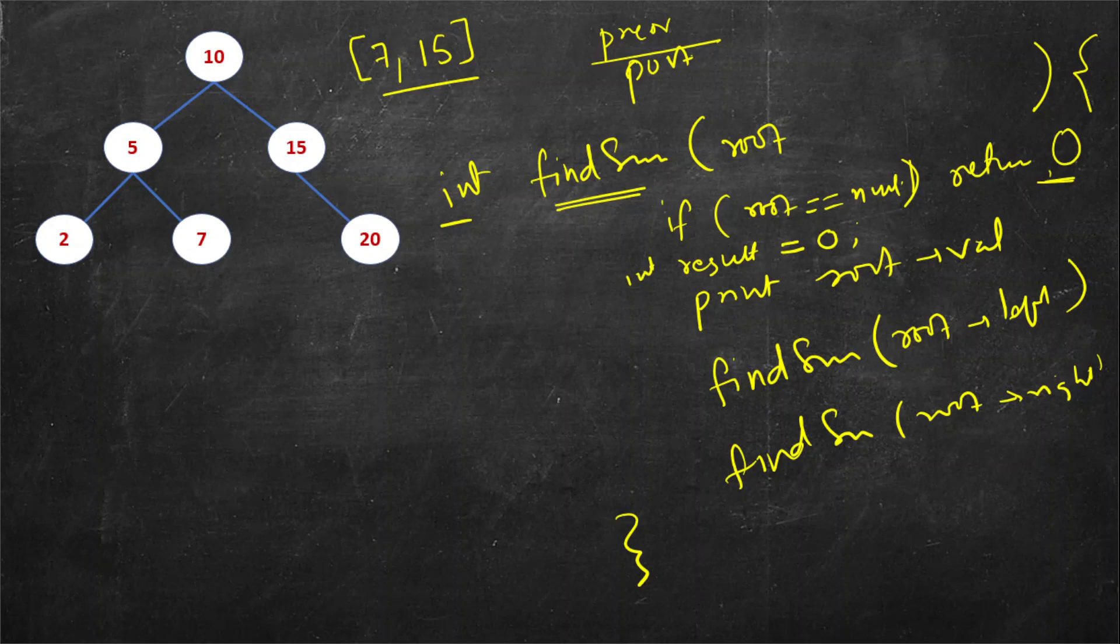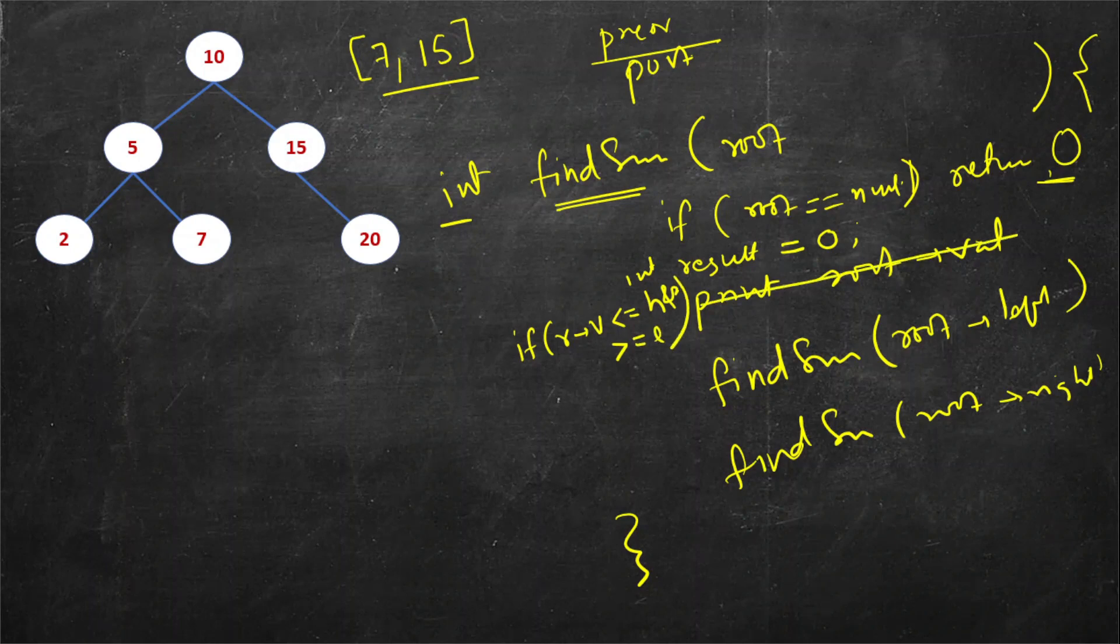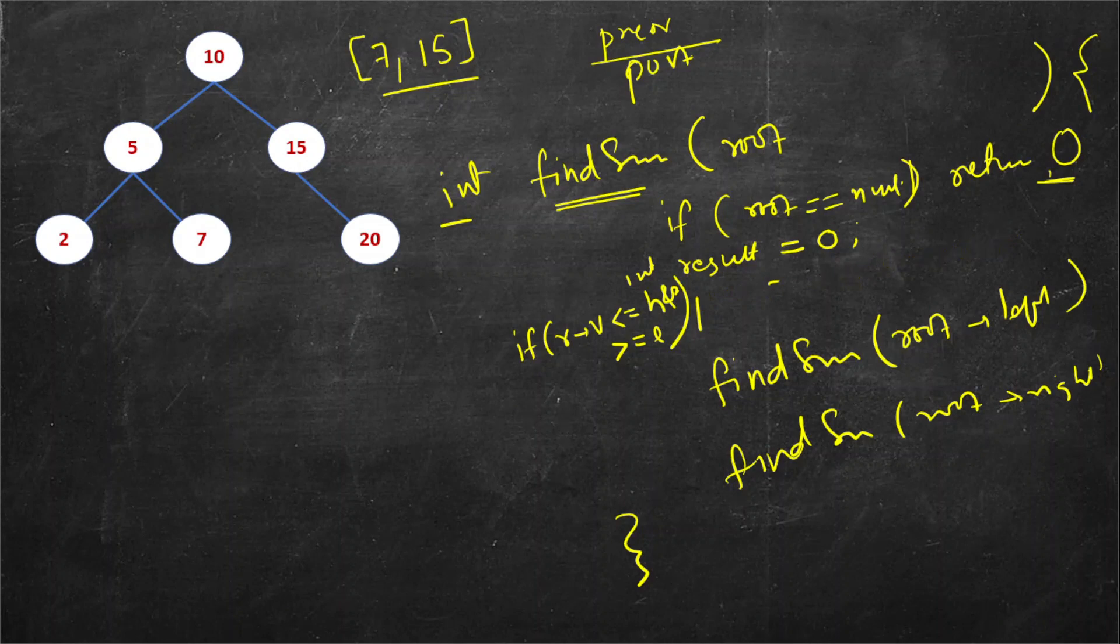Instead of just printing the root value, you check if root value is less than equal to high and greater than equal to low, then instead of printing it we will add it to the result: result plus equal to root val.